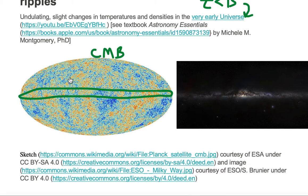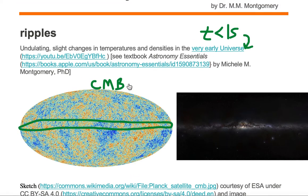The slight changes in temperature from average reflect the slight changes in densities in the universe. The cosmic microwave background shows an imprint of the ripples, which are slight changes in temperatures and densities in the very early universe.